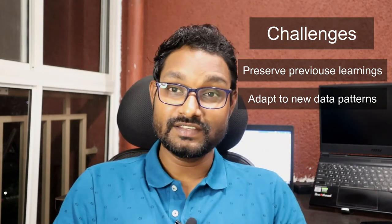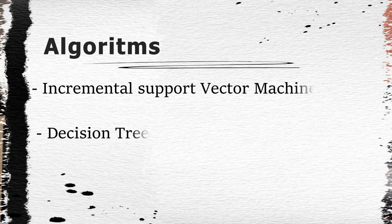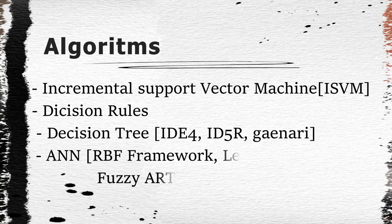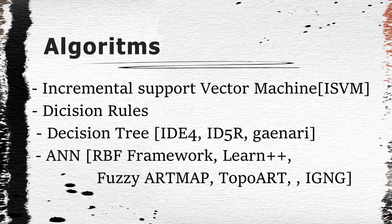Now let's talk about how you can do incremental learning and what machine learning algorithms are available. First is incremental support vector machine; second is decision rules; then decision tree related algorithms like ID4, ID5R, and GENERI; artificial neural networks like RBF network, Learn++, Fuzzy ARTMAP, TopoART, and IGNG. These are all examples of incremental learning algorithms. Hope today you are able to understand what is incremental learning, its advantages, challenges, and the different algorithms available.